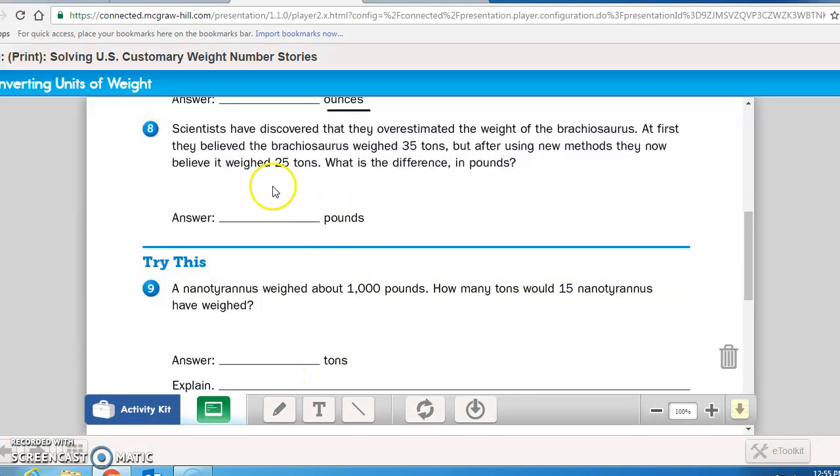Number eight: Scientists have discovered that they overestimated the weight of the Brachiosaurus. At first, they believed the Brachiosaurus weighed 35 tons, but after using new methods, they now believe it weighed 25 tons. What is the difference in pounds? Right away, you should have noticed when it says difference, you should know you're going to be subtracting 35 tons minus 25 tons. Get your answer, but they want it in pounds, so you're going to be multiplying it by how many pounds are in a ton. Pause the recording now, and do number eight.